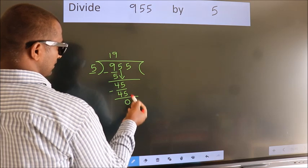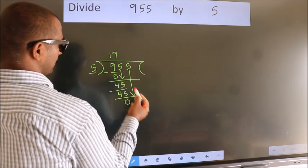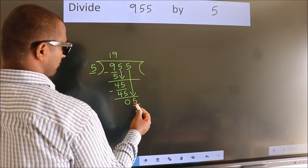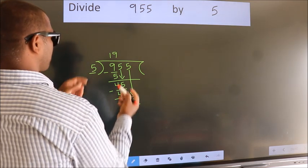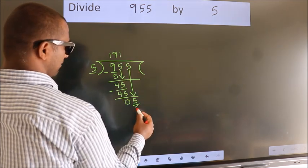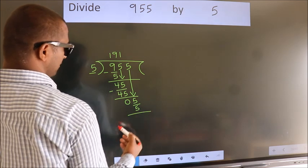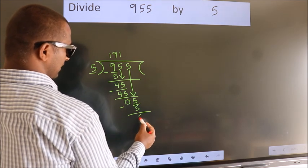After this, bring down the beside number, so 5 down, so 5. When do we get 5? In 5 table. 5 once, 5. Now we subtract, we get 0.